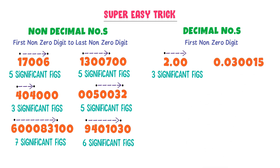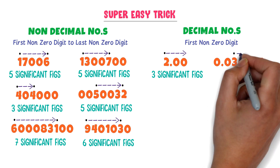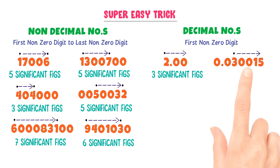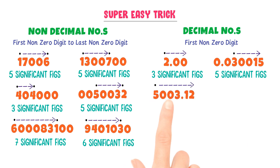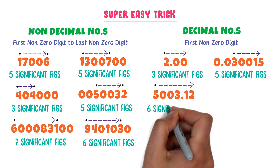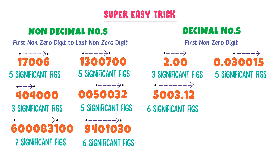Consider another decimal number where 3 is the first non-zero digit. Go from 3 — 1, 2, 3, 4, 5 — so there are five significant figures. Consider a third decimal number where the first non-zero digit is 5. Go from 5 — 1, 2, 3, 4, 5, 6 — there are six significant figures present in this number.